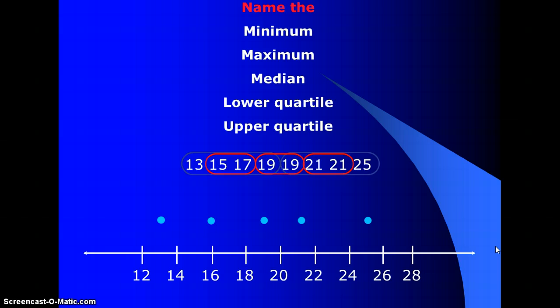For this set of data, you're to find the minimum, the maximum, the median, the lower quartile, and the upper quartile. And create a box and whisker plot.